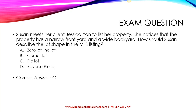A corner lot, of course, is the lot that is on the corner. So in this case, because the question describes the property as having a narrow front yard and a wide backyard, the correct answer is a pi lot.